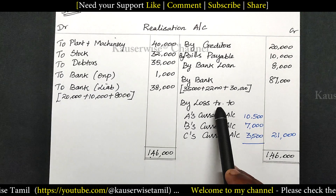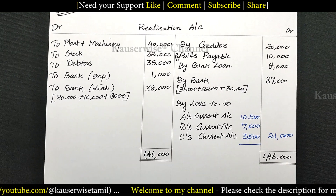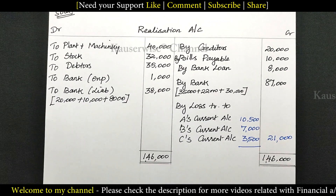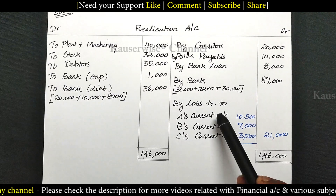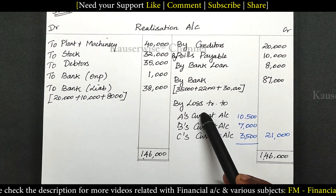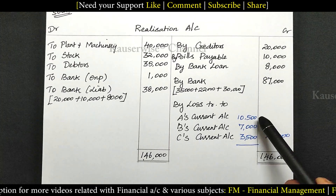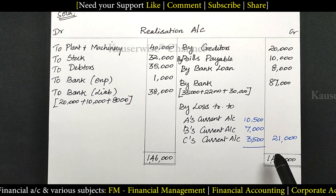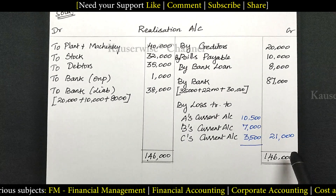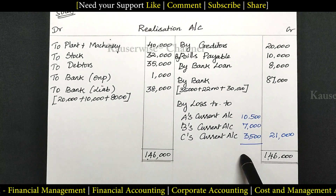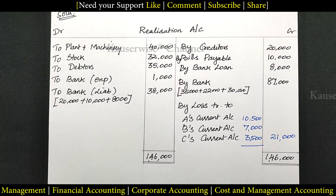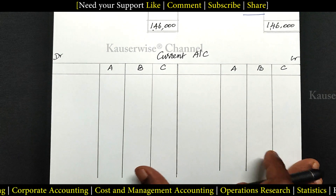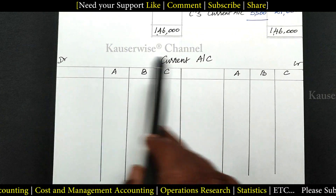This 21,000 loss on realization will be transferred to all partners' capital accounts if they maintain fluctuating capital method. But in this problem they are maintaining fixed capital method, so the balancing figure will be transferred to all partners' current accounts. The loss will be transferred to A's current account, B's current account, and C's current account according to their profit sharing ratio of 3:2:1.